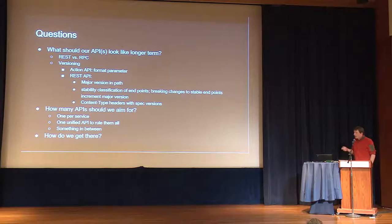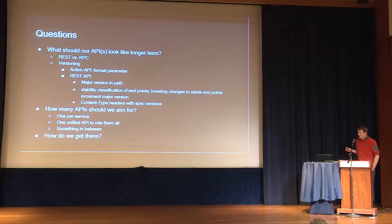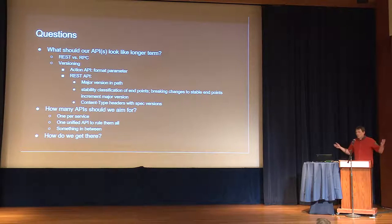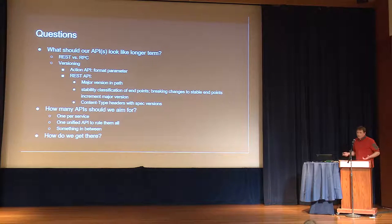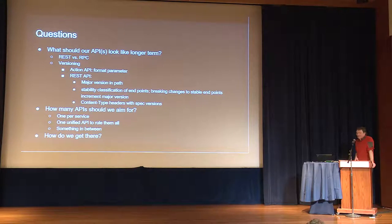There are also content type headers with spec versions, so you can detect non-breaking minor changes. Then there's the question of the number of APIs—new services like ORES can expose a separate API, or we could have one unified API that binds them all with unified monitoring and discovery. Or something in between. And finally, if we establish agreement on direction, how do we get there incrementally without rewriting everything from scratch?